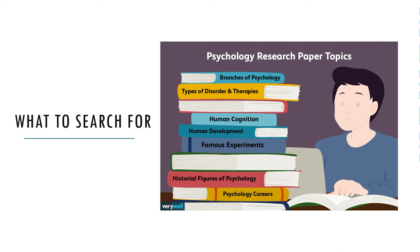Second, you should look for review articles on your topic because they'll provide a useful overview, often discussing important definitions, results, theories, trends, and controversies, giving a good sense of where your own research fits into the literature. You should also look for empirical research reports addressing your question or similar questions, which can give you ideas about how to measure your variables and collect your data. As a general rule, it's good to use methods that others have already used successfully, unless you have good reasons not to. Finally, you should look for sources that provide information to help you argue for the interestingness of your research question.